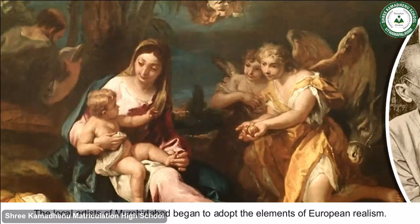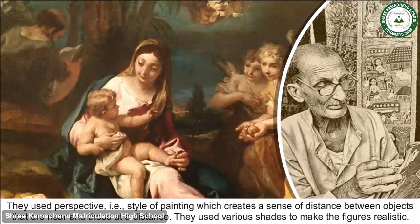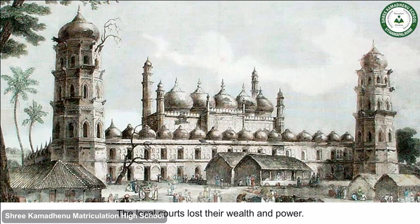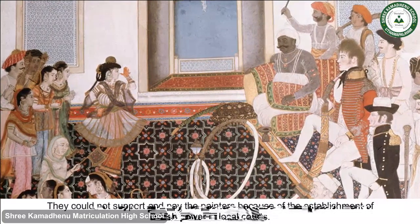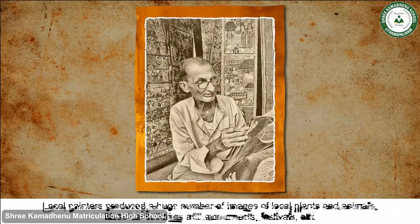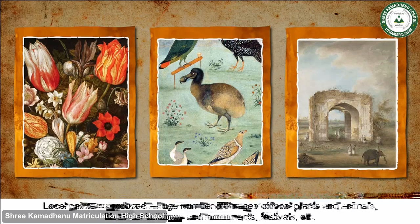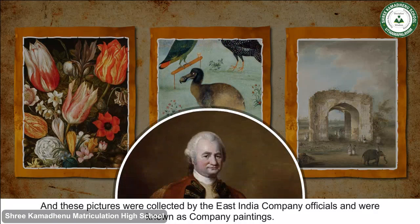The local artists of Murshidabad began to adopt the elements of European realism. They used perspective — a style of painting which creates a sense of distance between objects near and those at a distance — and used various shades to make figures realistic. As local courts lost their wealth and power due to British dominance, local painters produced large numbers of images of local plants and animals, historical buildings, monuments, and festivals. These were collected by East India Company officials and became known as company paintings.